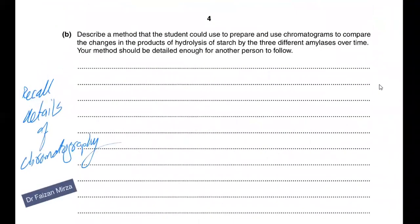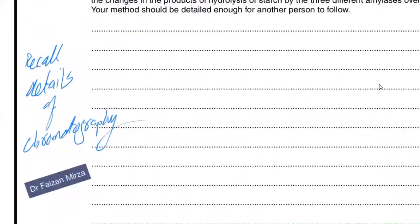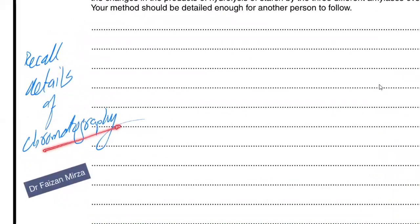Describe a method the student could use to prepare the chromatograms to compare the changes in the products of hydrolysis of starch with three different amylases over time. Your method should be detailed enough for the other person to use. Now I've not written the details here. Recall the details of chromatography from my other video. I'll share the link in this video as well. So what do we do? You will just make sure that you will take one enzyme, for example, alpha amylase to incubate for 60 minutes at 35 degrees Celsius using that pH buffer with that particular starch 2% suspension.